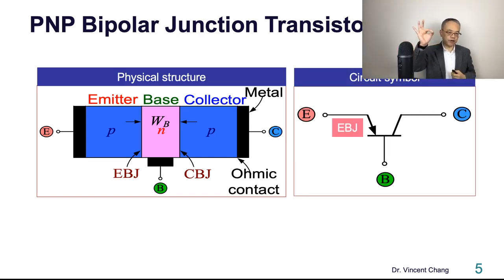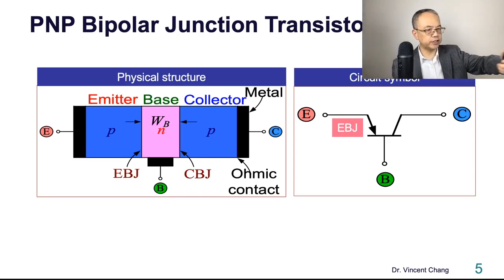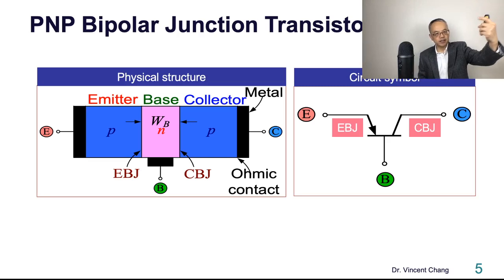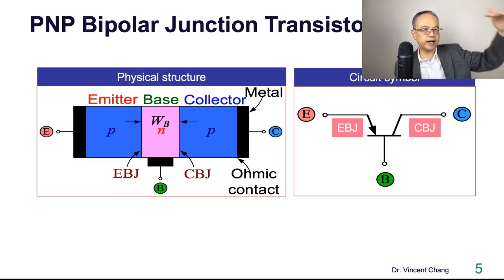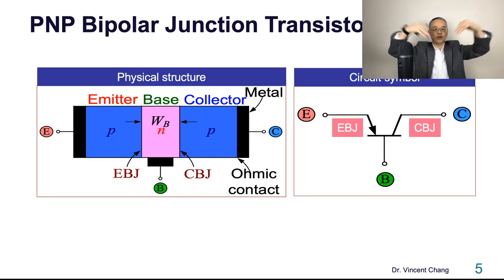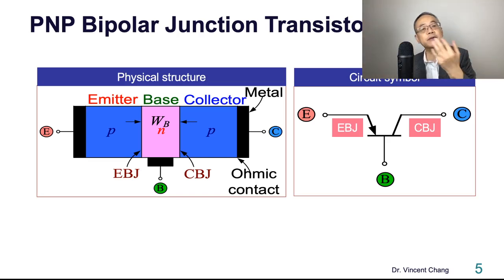The first junction on the left is associated with the emitter base junction, going from P to N. The other junction is the collector base junction, so the structure is P-N-P. There's no need to put another arrow for the second junction because two arrows would get confusing — so we just put the arrow on the emitter side: P-N-P.